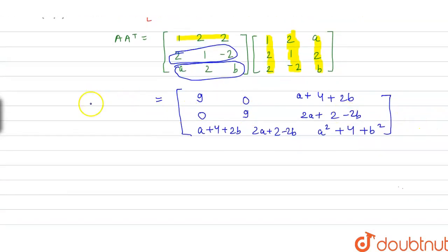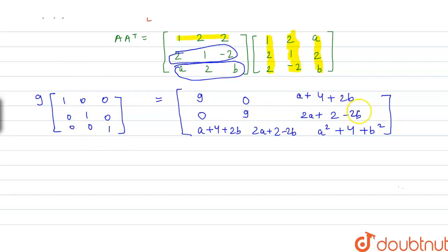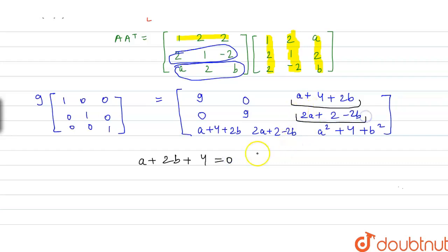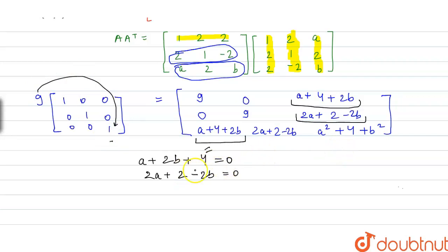So the product matrix equals 9 times the identity matrix I, which has 1s on the diagonal and 0s elsewhere. Comparing the off-diagonal entries: A + 4 + 2B = 0, and 2A + 2 − 2B = 0. Comparing the diagonal entry (3,3): A² + 4 + B² = 9, which means A² + B² = 5.